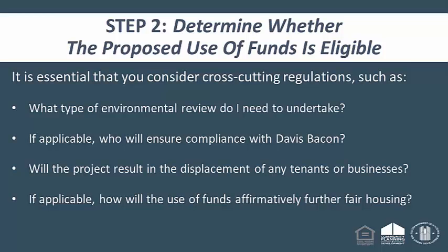Also part of step two is considering the cross-cutting federal regulations that apply. Key questions include: What type of environmental review will you need to undertake, depending on the nature of the activity? For construction projects, who will ensure compliance with Davis-Bacon? If your project displaces any residents, including tenants or businesses, you need to consider Uniform Relocation Act requirements. And how will the use of funds affirmatively further fair housing, especially considering the recent rule HUD has issued?